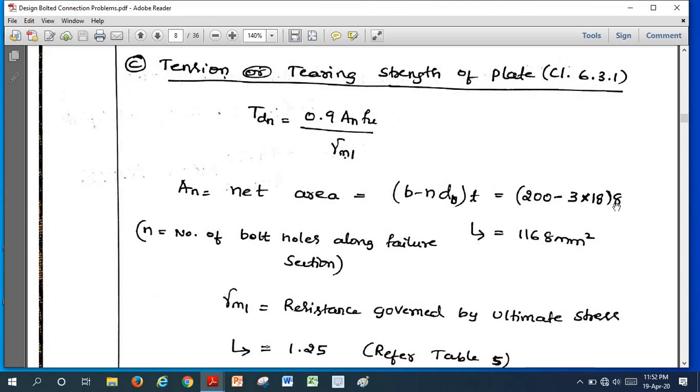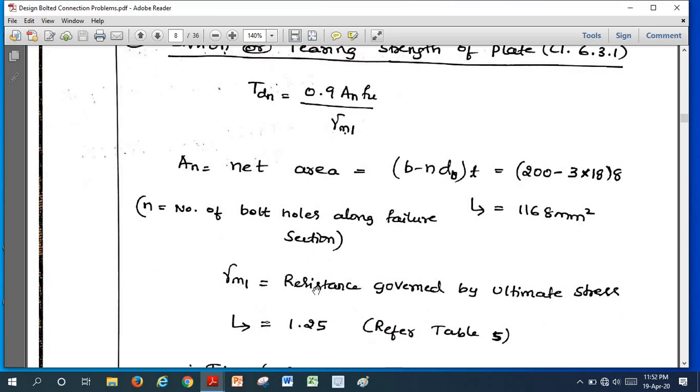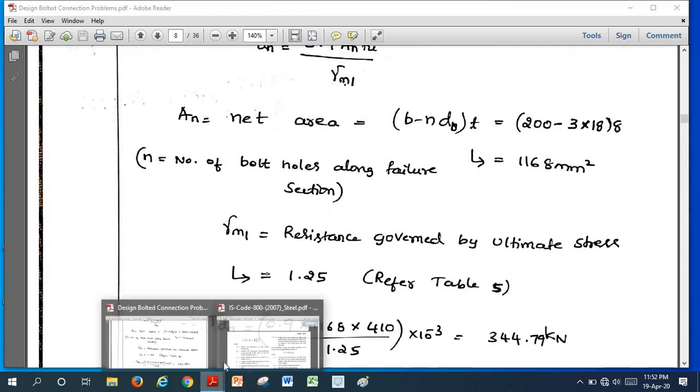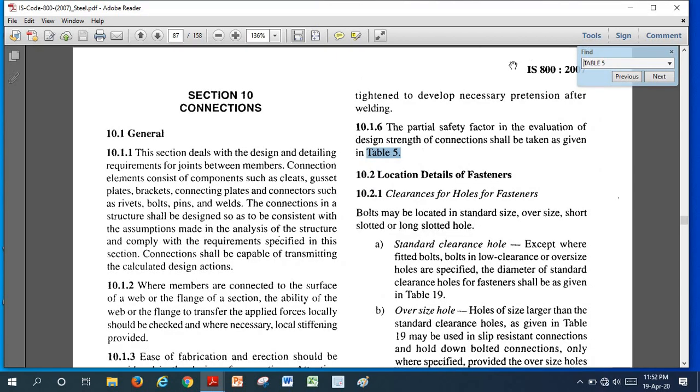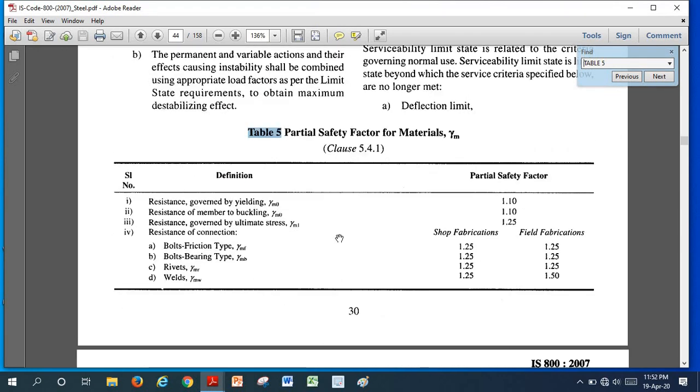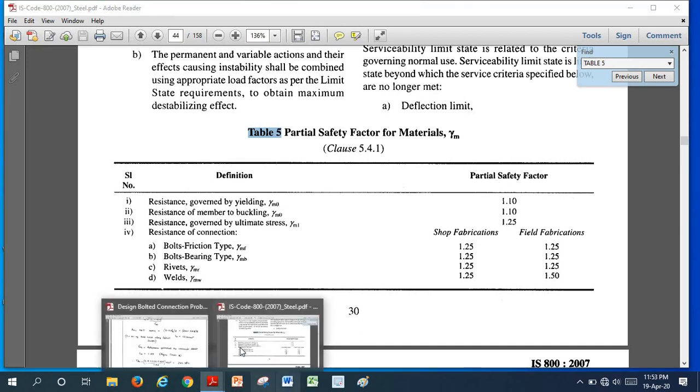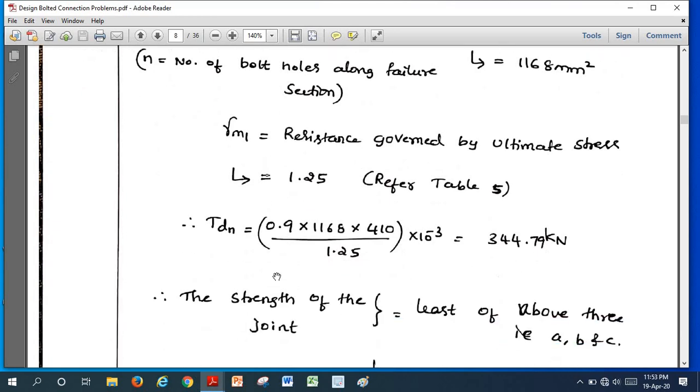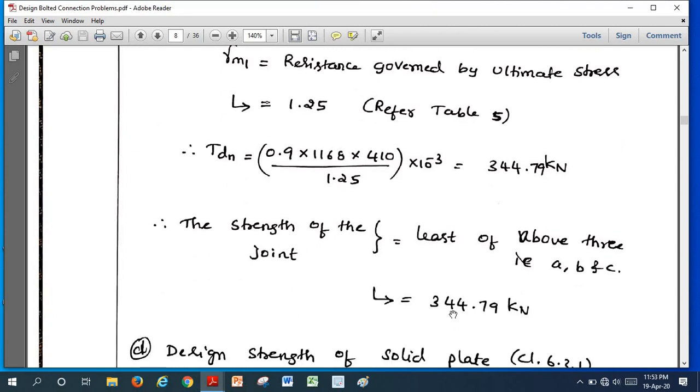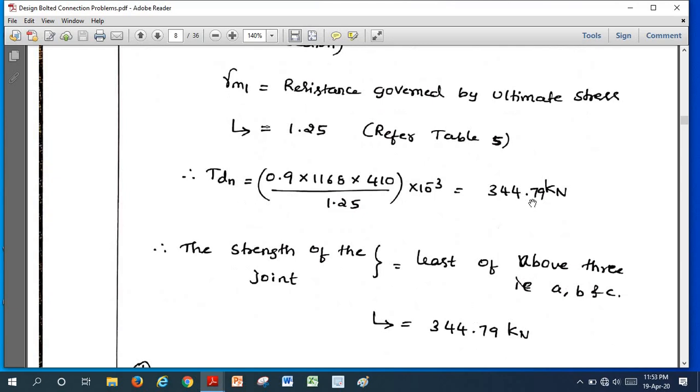Now if you substitute these values in the formula, in our case net area will be (b - nd) × t: 200 minus three bolts are coming on the line, that is section we have taken 1-1 section, 3 × diameter of the bolt hole × least plate thickness, you will get this much of area. Where n is number of bolts along the failure section, γₘ₁, the resistance governed by the ultimate strength, should be taken from table number 5 of IS-800. Here if you see, resistance governed by the ultimate stress, γₘ₁ is 1.25, the partial factor that comes in page number 30. So here if you substitute all these values in Tdn formula, we will get 344.7 in kilonewton. Next question, what is strength of the joint? Strength of the joint is the least of above three values, that is bearing strength of the joint, shear strength of the joint, and tension strength. This is the least here, that will be equal to 344.7 in kilonewton.